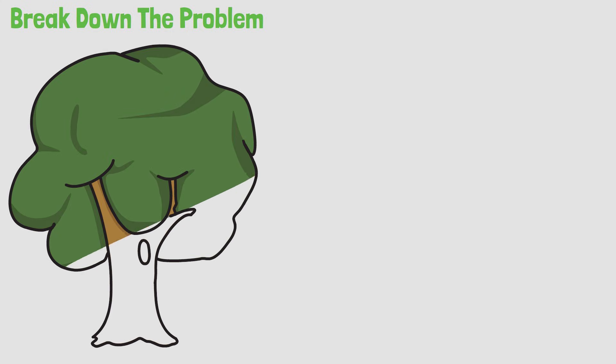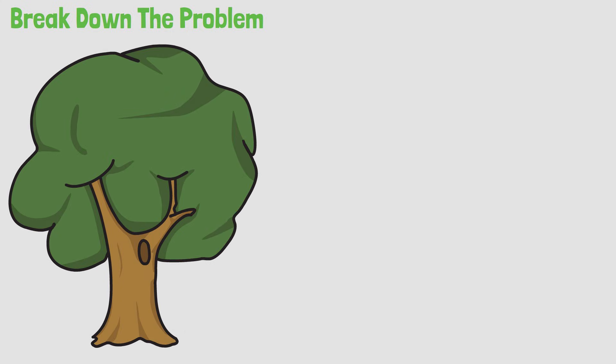Step two: Break down the problem. Elon Musk explains breaking down a problem with a tree. You first have to understand the fundamental principles of your problem. These principles represent the trunk and the branches.